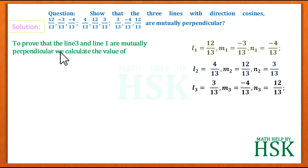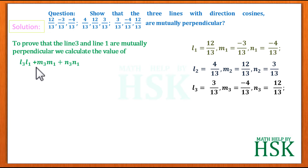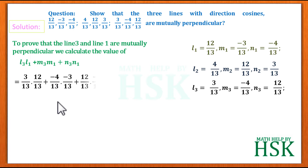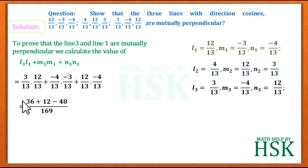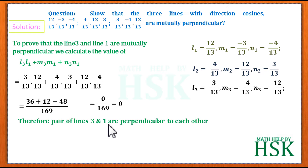Now we prove that lines 3 and 1 are mutually perpendicular by calculating l3·l1 + m3·m1 + n3·n1 = (3/13)·(12/13) + (−4/13)·(−3/13) + (12/13)·(−4/13). This gives 36 + 12 − 48 = 0 upon 169, which equals 0.